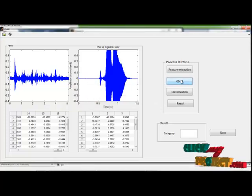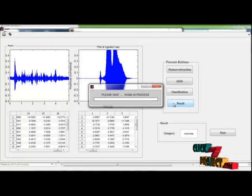The classification process has to be done. Then we click the classification button. If the signal is displayed, whether it is normal or abnormal, then click the result button.